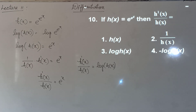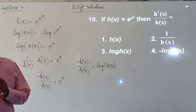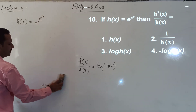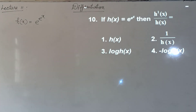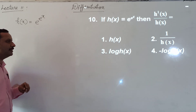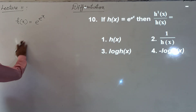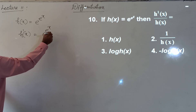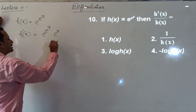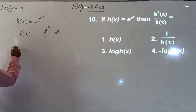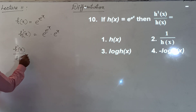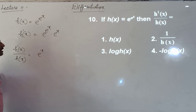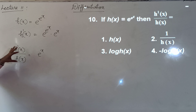Alternatively, differentiating h(x) = e^(e^x) directly: h'(x) = e^(e^x)·e^x. So h'(x)/h(x) = e^(e^x)·e^x / e^(e^x) = e^x. Now log h(x) = log(e^(e^x)) = e^x·log e = e^x, confirming that h'(x)/h(x) = log h(x). The third option is correct.